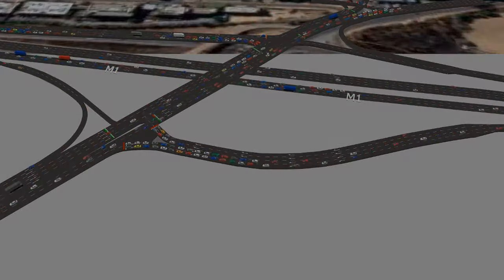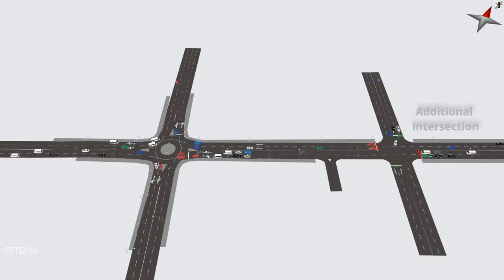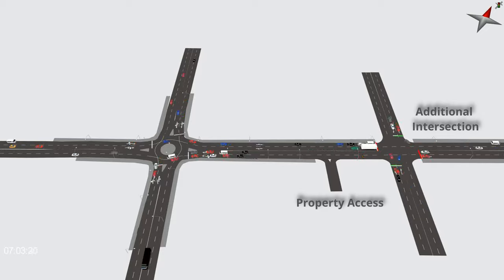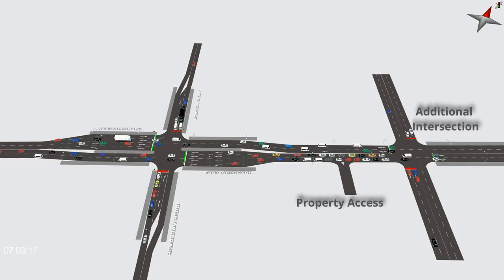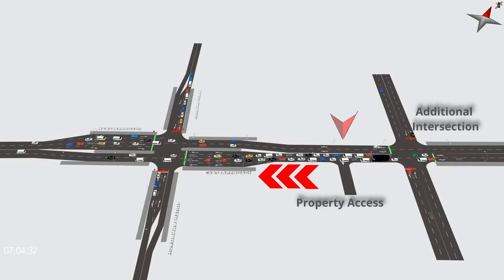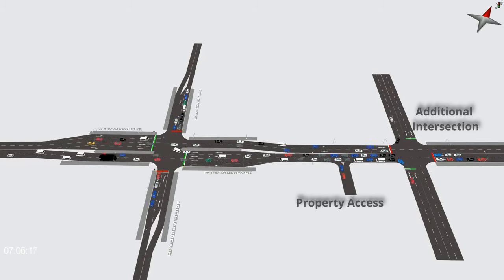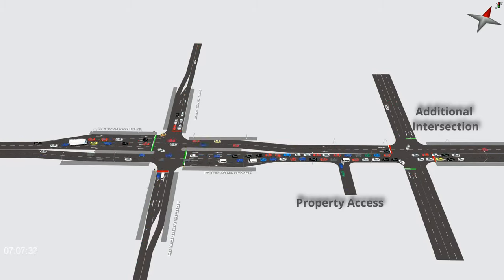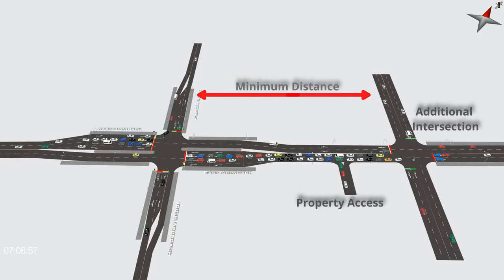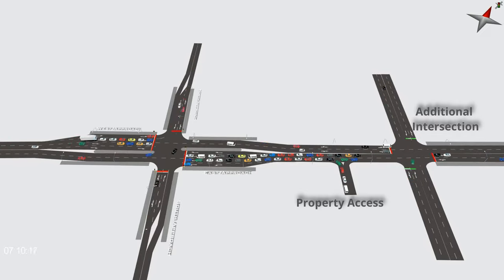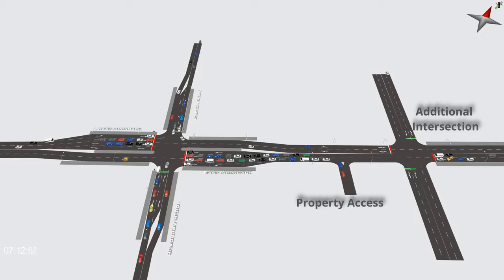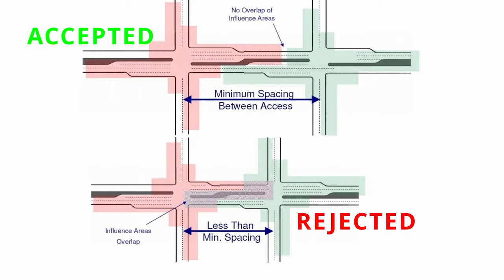Looking again at the two intersections, this time with an additional intersection and property access added: for the roundabout, there is very little queuing — there isn't anything to worry about. But for the signalized intersection, we see a real issue — the other intersection and property access are now congested. City officials know this well, because they get all the complaints after an intersection is built. As such, planning documents govern the minimum distances between intersections, and these vary depending on where you live. If the access spacing is too short, road authorities will reject the designer's proposal for a type of intersection, regardless of how efficient it may be.